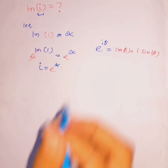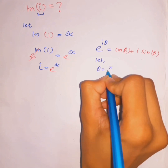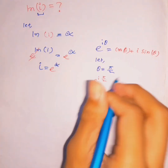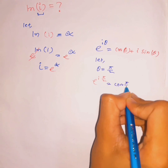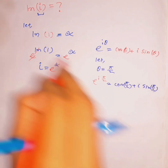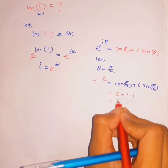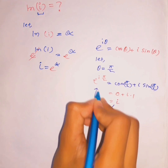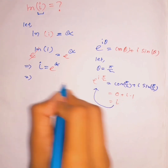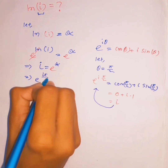Let θ equal π/2. So e^(i·π/2) equals cos(π/2) plus i·sin(π/2). Now cos(π/2) equals 0 and sin(π/2) equals 1, so this simplifies to just i. So instead of i we can write e^(i·π/2).